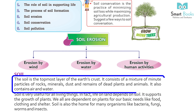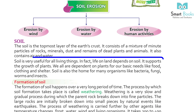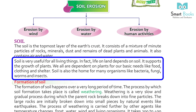The soil is the topmost layer of the earth's crust. It consists of a mixture of minute particles of rocks, minerals, dust, and remains of dead plants and animals. It also consists of air and water. Soil is very useful for all living things. In fact, life on land depends on soil.